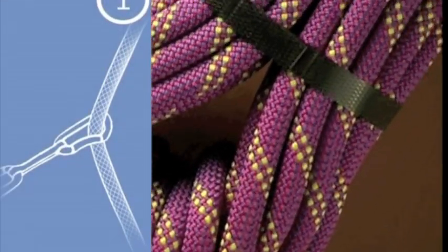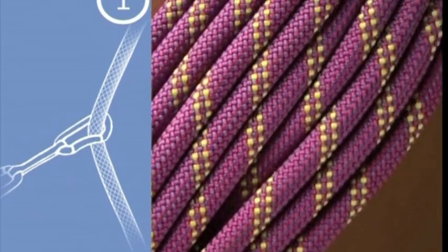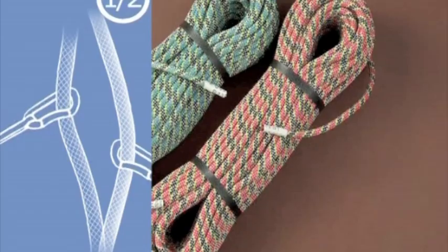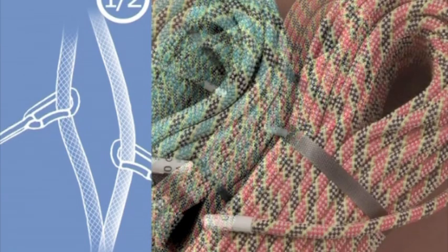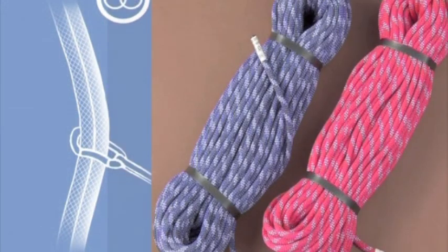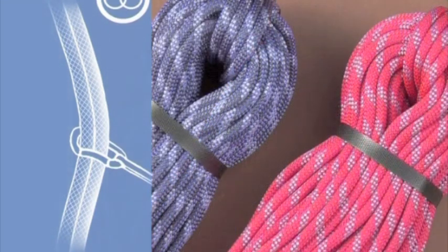We can distinguish between single ropes, which are used as a single strand and are widely used in sport climbing. Double ropes, which are used on long climbs, particularly where an abseil descent may be necessary, or when running belays may be random and out of line, requiring alternate clipping. There are also twin ropes, which are always used with both strands clipped together, and which are also handy for abseiling.